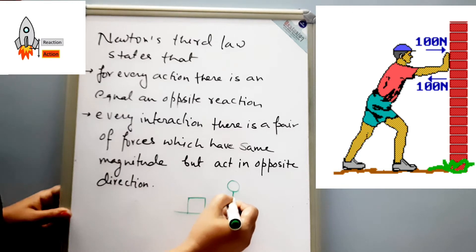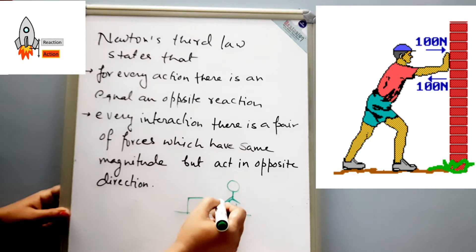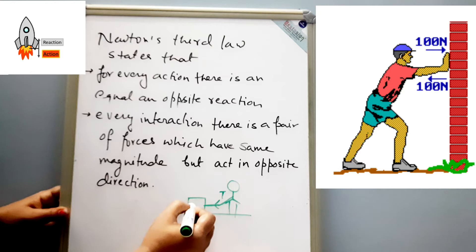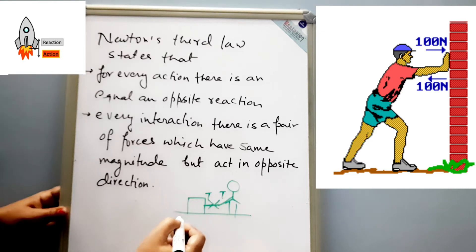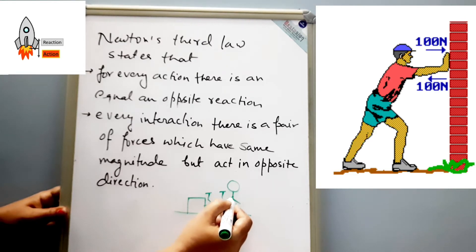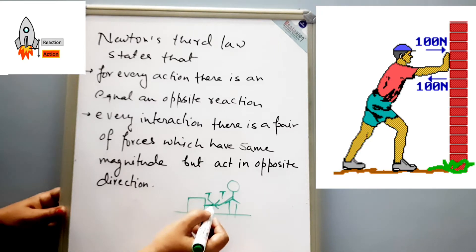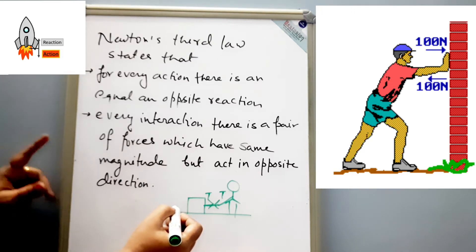This boy is using a rope to pull this box. The boy pulls the box and because of that, a tension force T develops in the rope in that direction. Because of this tension, the box also applies a force which is opposite in direction but same in magnitude — so there will be another T. Because of the boy pulling the box, two forces develop in the rope, both equal to T in magnitude but opposite in direction. This is Newton's third law, and we have to know this concept well when understanding a person in a lift.